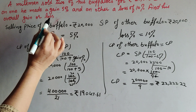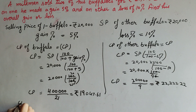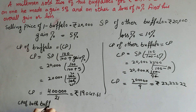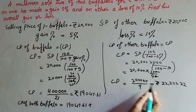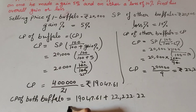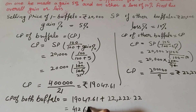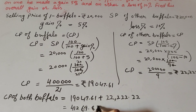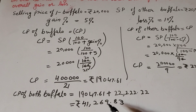Now we find the overall gain or loss in the transaction. We add the cost prices of both buffaloes. Total cost price of two buffaloes = cost price of first buffalo (19,047.61) + cost price of second buffalo (22,222.22). Adding these two terms gives us 41,269.83. So the total cost price of two buffaloes is rupees 41,269.83.